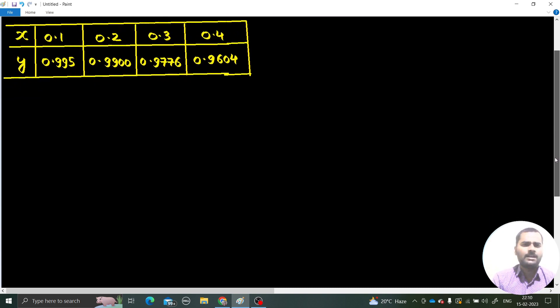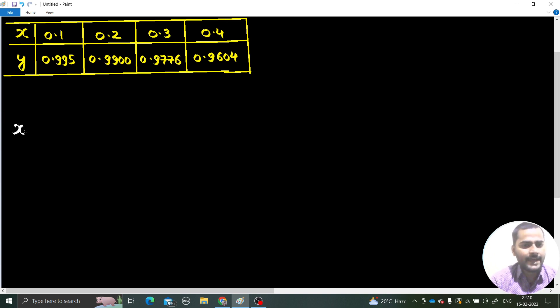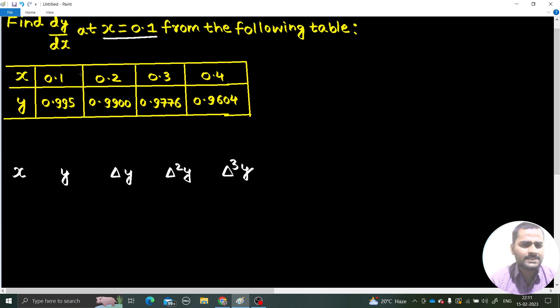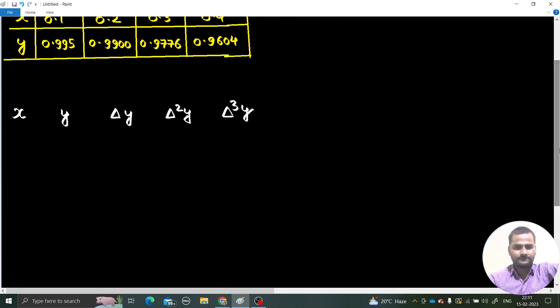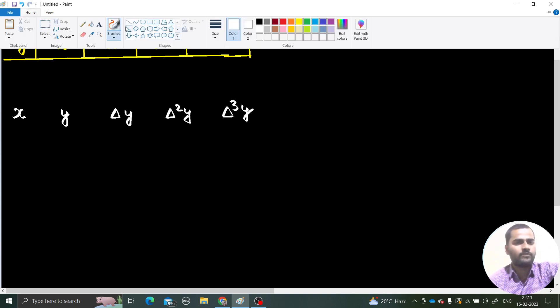First of all, as usual make the difference table that we usually do. We have x, we have y, and I think we will have to go till third difference. So, the first difference will be this, then the second difference and the third difference. Why I am calculating forward difference and not the backward difference? Because the value at which they are asking is lying on the top of the table. 0.1 is at the top of the table. That's why I am going for forward difference table.